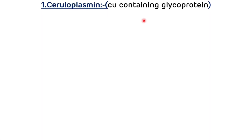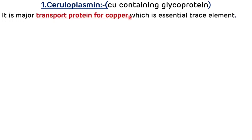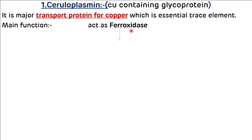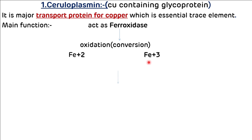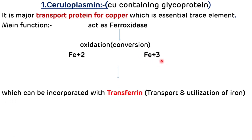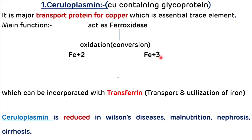Ceruloplasmin is a copper-containing glycoprotein and is the major transport protein for copper, which is an essential trace element. The main function of ceruloplasmin is it acts as a ferroxidase — it causes oxidation of Fe²⁺ into Fe³⁺, after which Fe³⁺ can be incorporated with transferrin, helping in the transport and utilization of iron. Ceruloplasmin level is reduced in Wilson's disease, malnutrition, nephrosis, and cirrhosis.